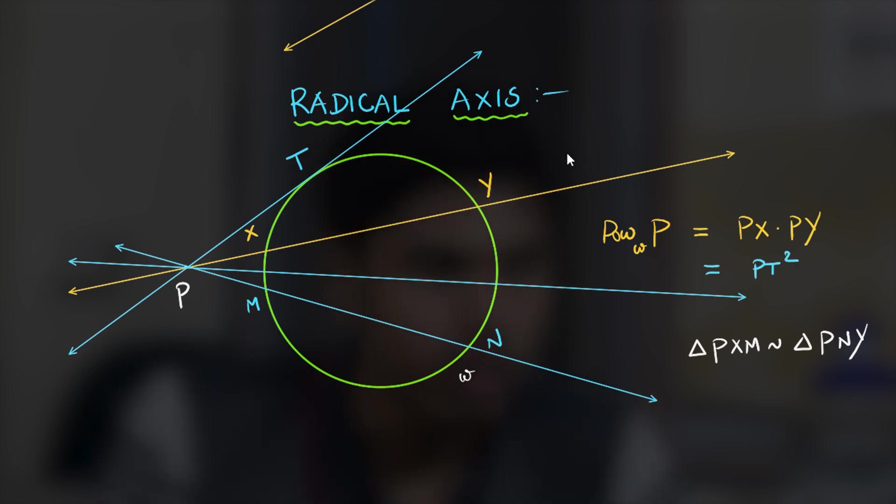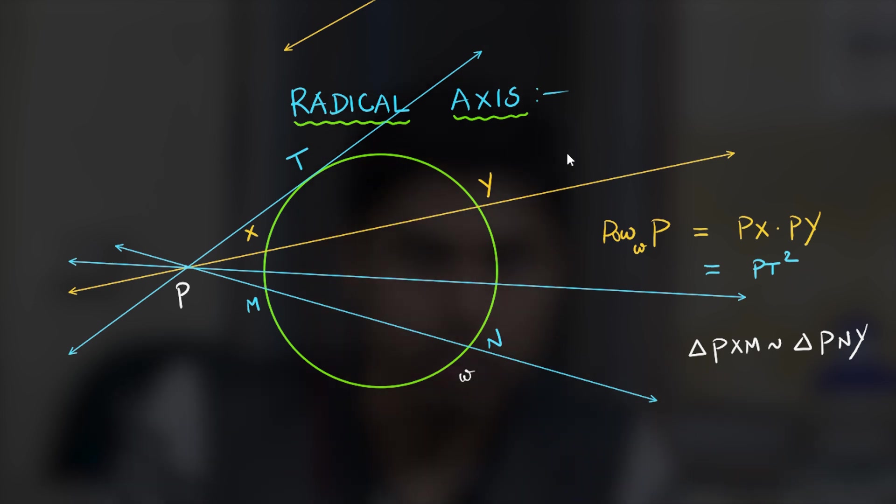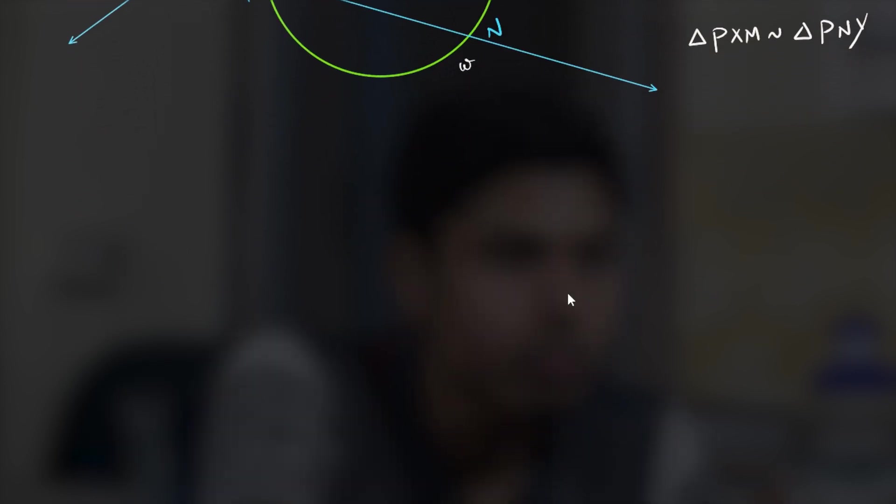So now let's assume that this is true that the power is invariant of the line so we will only define it with respect to a circle and a point. And mind you the point might be inside or on or outside the circle. So now we will define something called the radical axis of two circles.